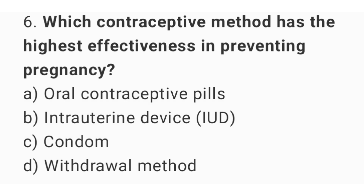Question number six: which contraceptive method has the highest effectiveness in preventing pregnancy? The right answer is option B, intrauterine device.